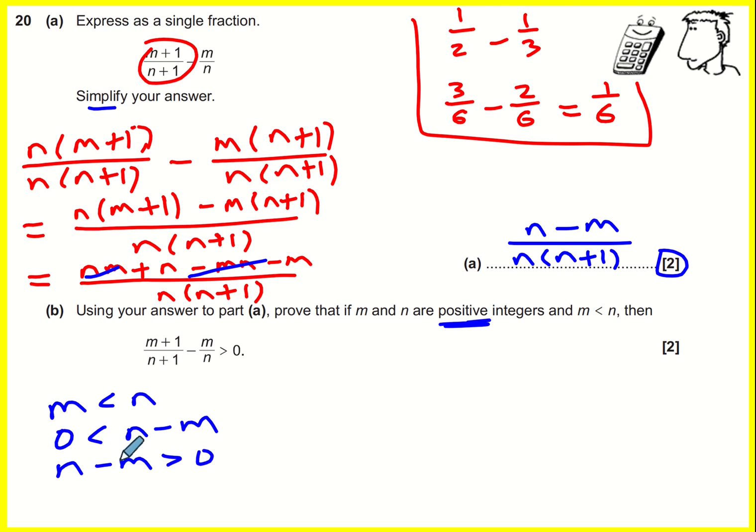So if n minus m is greater than zero, then it must mean now that this thing here is greater than zero, because this is also positive.